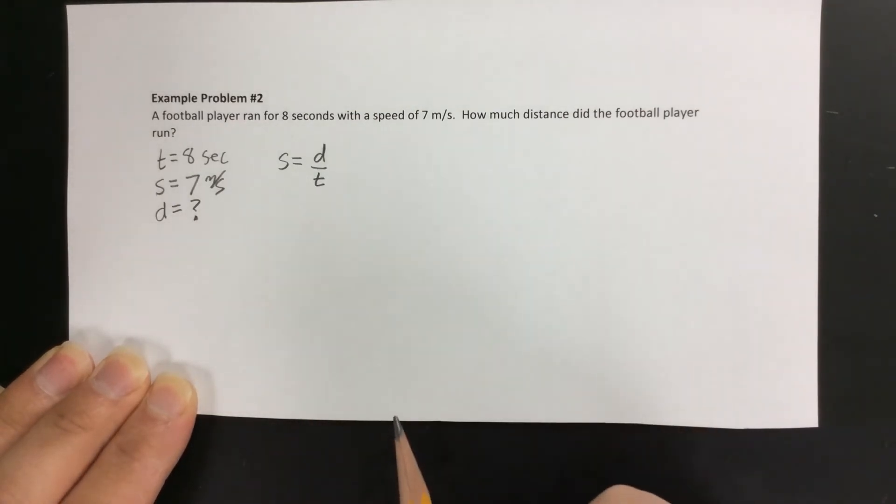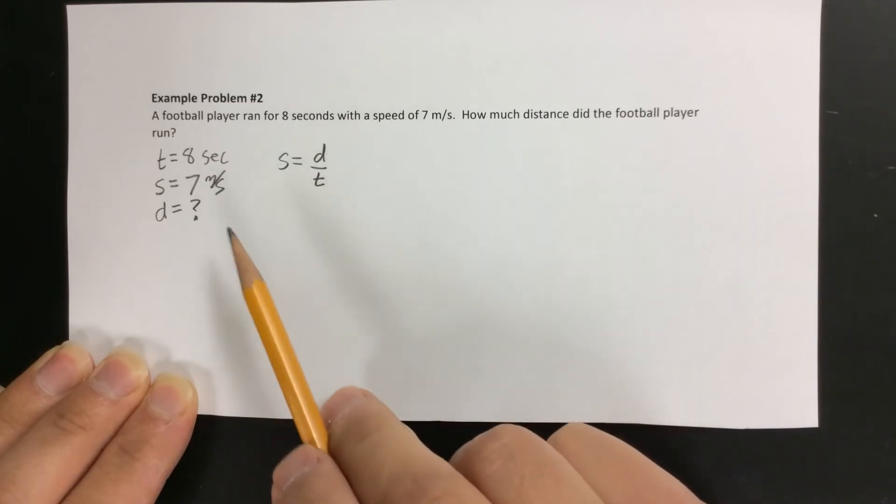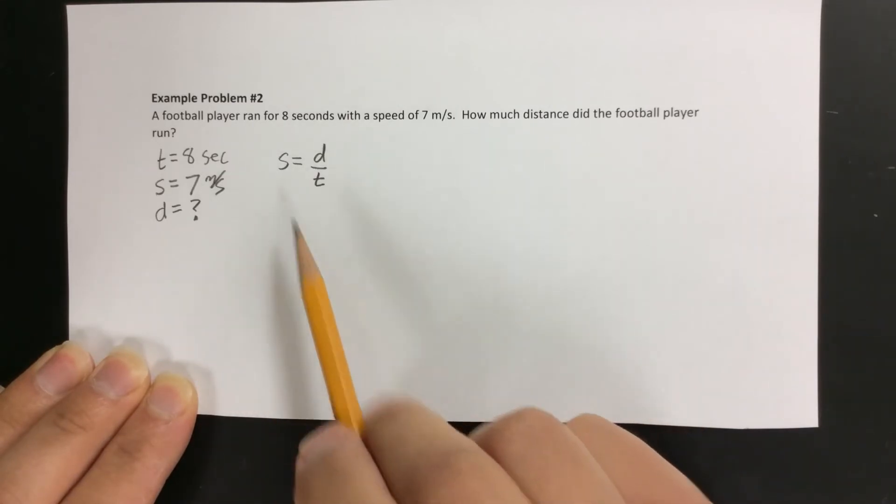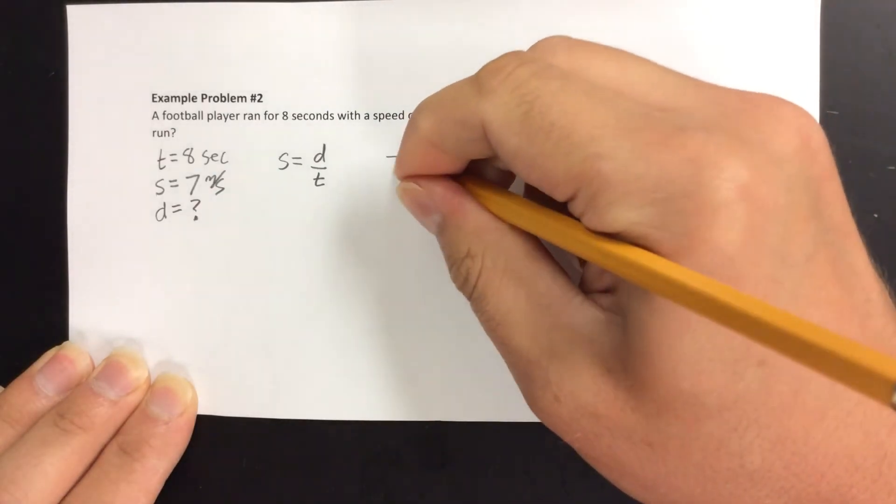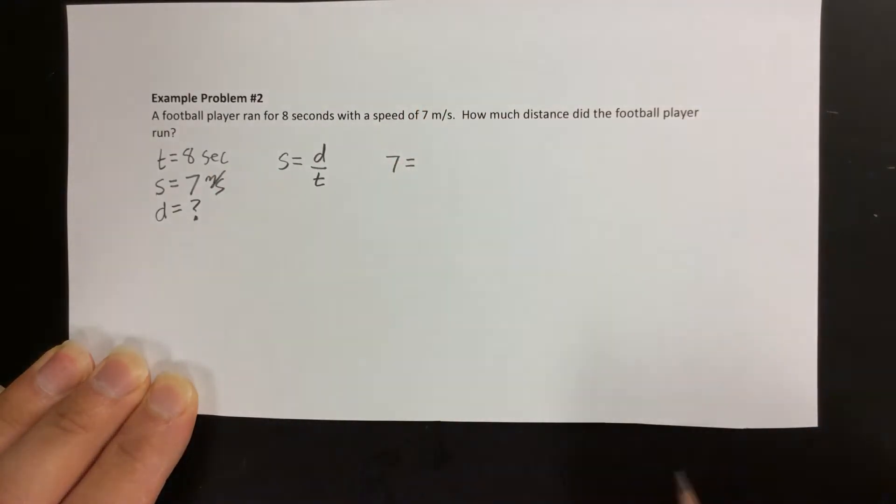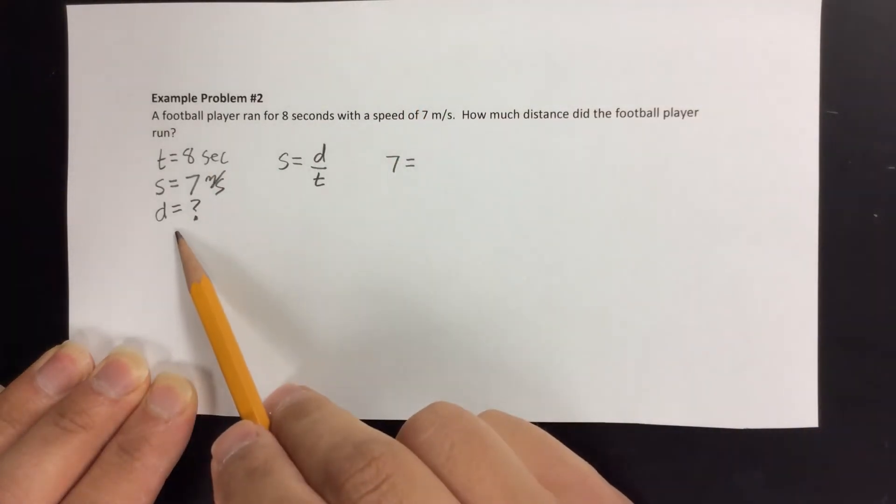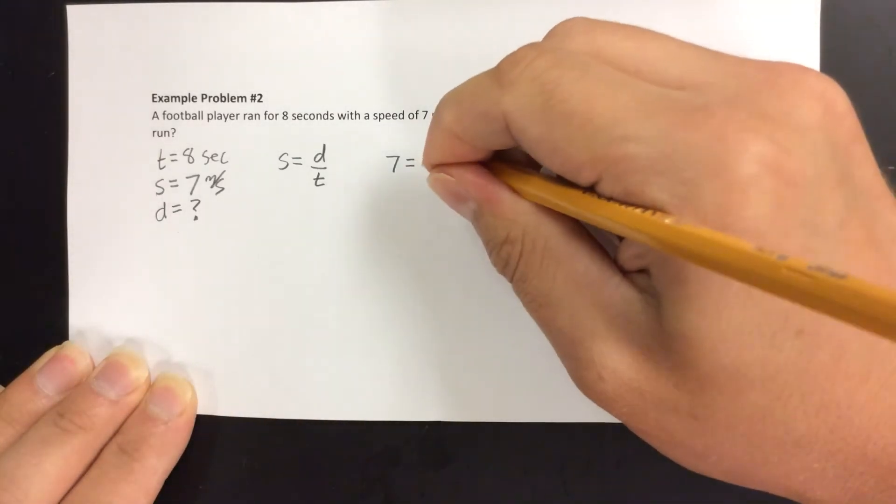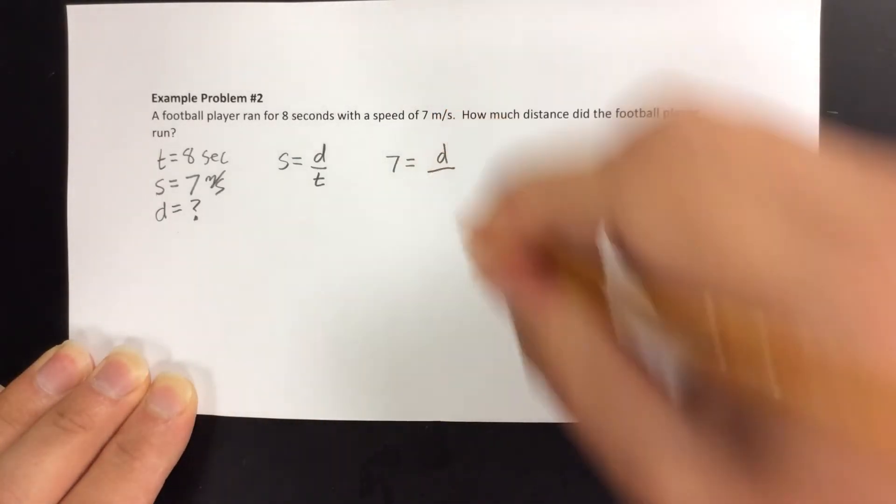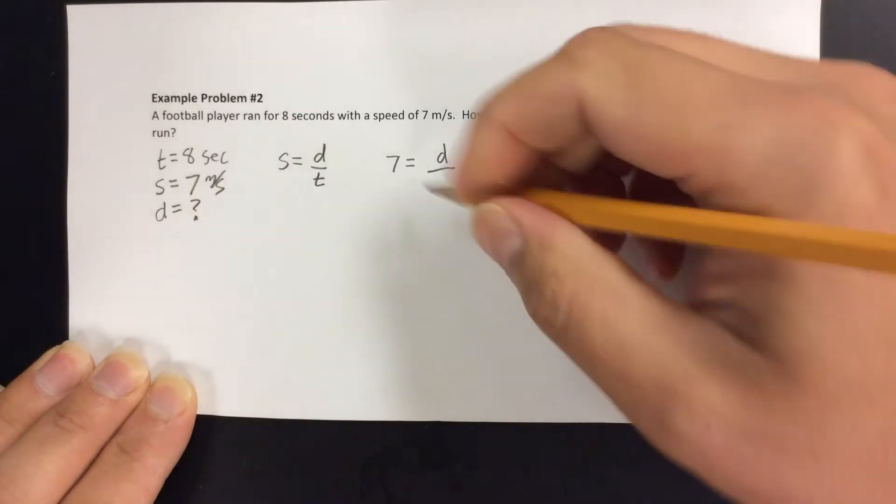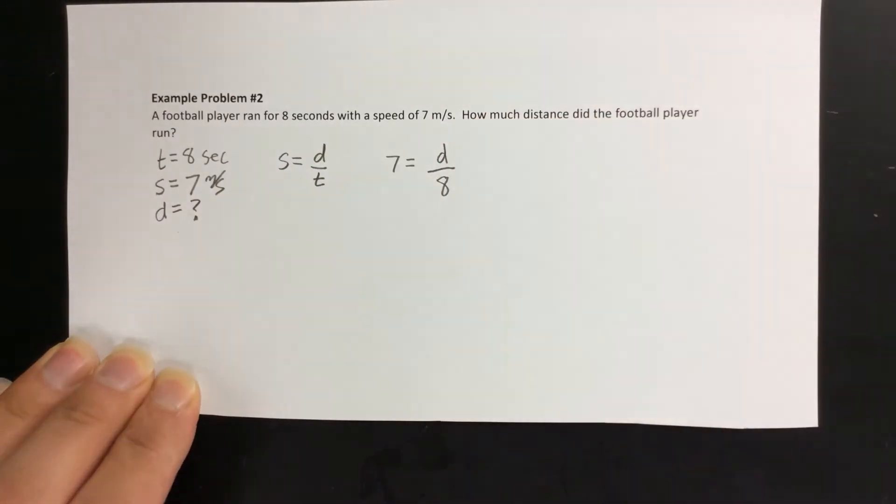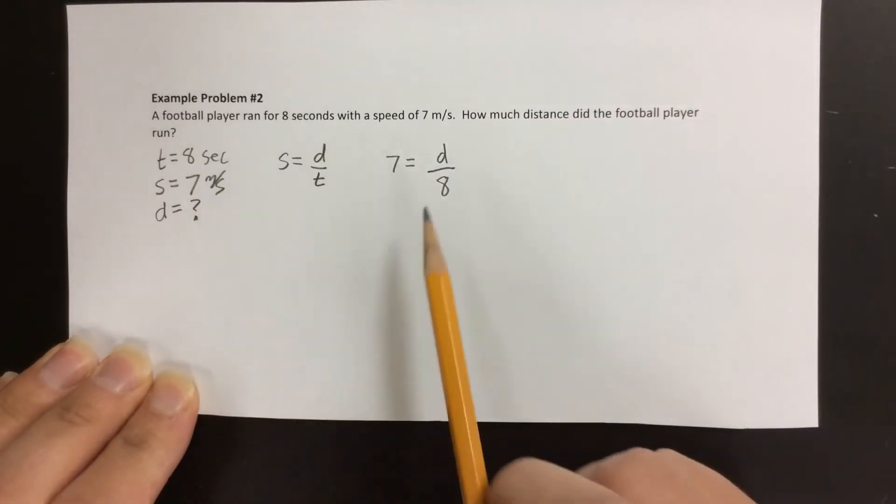Our next step is to plug in the numbers. We replace all the letters we know with the numbers that represent them. For S, we replace that with 7. For distance, we don't know what that is, so we leave that as D, divided by our time, which we know is 8.